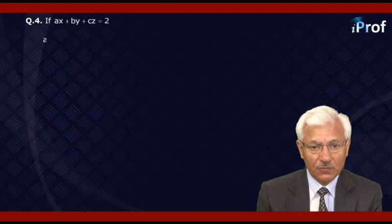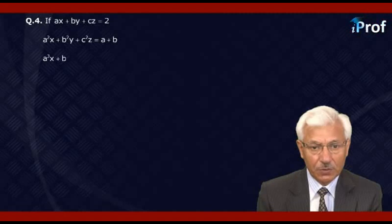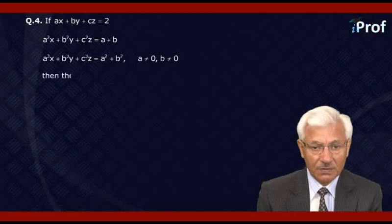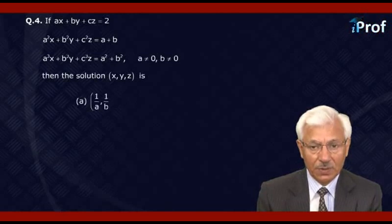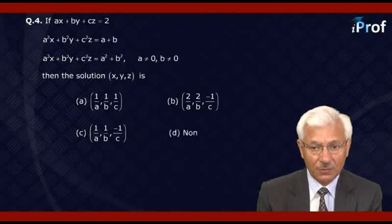The next question is: if AX + BY + CZ = 2, A²X + B²Y + C²Z = A + B, A³X + B³Y + C³Z = A² + B², given that A and B are not 0. Then the solution (X, Y, Z) is equal to: option 1: (1/A, 1/B, 1/C); option 2: (2/A, 2/B, -1/C); option 3: (1/A, 1/B, -1/C); option 4: none of these.